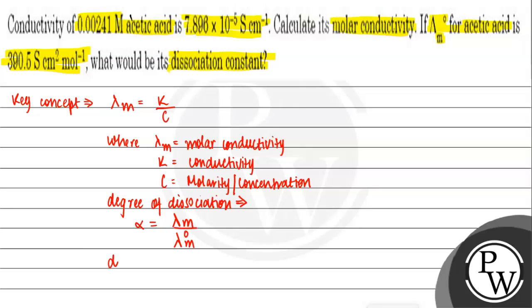Dissociation constant is kappa equals to concentration into degree of dissociation divided by 1 minus degree of dissociation. Where alpha is degree of dissociation and lambda m naught is limiting molar conductivity.